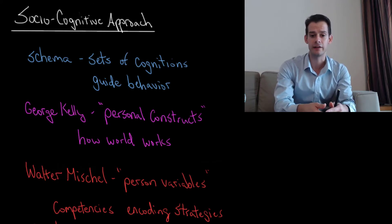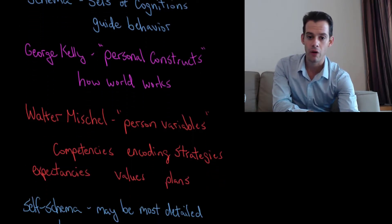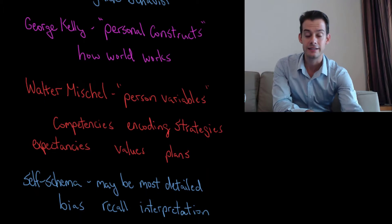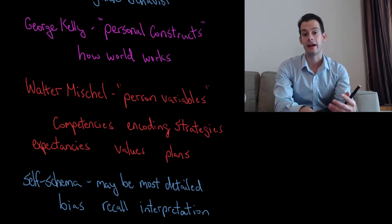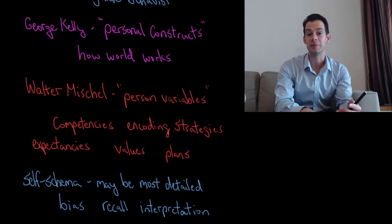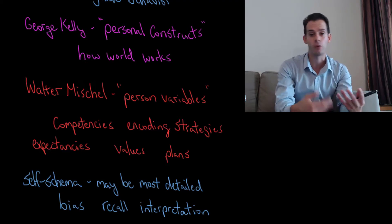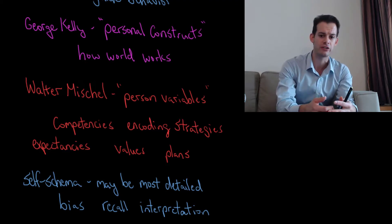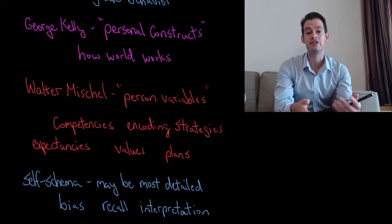Another related idea from Walter Mischel is the idea of person variables. This was the idea that we all have different competencies, different coding strategies, expectancies, values, and plans. These are all going to influence how we think things are supposed to work — we have certain expectations for certain situations and certain views of our own abilities — and these are also going to influence our social behavior.